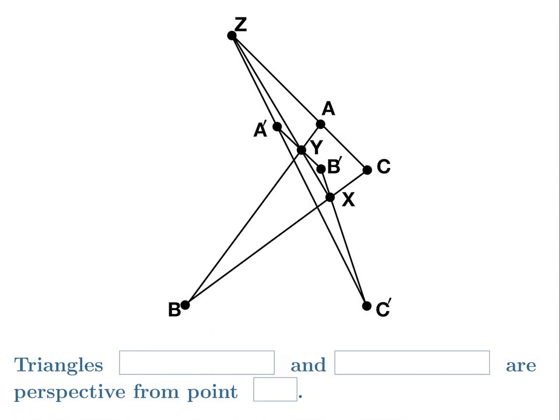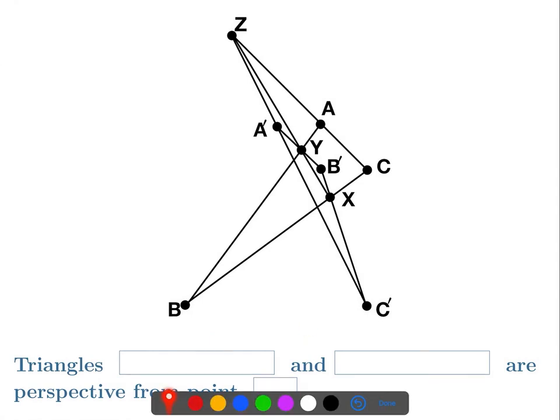We have two triangles here that are perspective from a line. We have two triangles perspective from the line: triangle ABC and triangle A'B'C'. To be perspective from the line means that when we extend the edges AB and A'B', they intersect at a certain point that we typically call P, but here we call it Y.